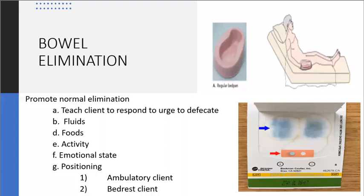In terms of normal bowel elimination, what assessment findings do you want to see? The abdomen should be non-tender and symmetrical. Listening to abdominal sounds, you should hear high-pitched gurgles indicating normal peristalsis. The stool should be light to dark brown. You can run a Guaiac test, and it should be negative for occult blood. The Guaiac test detects fecal occult blood — a fecal sample is placed on Guaiac paper and hydrogen peroxide is applied; in the presence of blood, a blue reaction appears within seconds — that's a positive Guaiac.